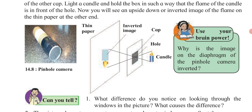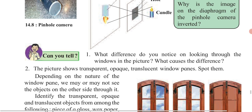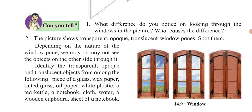The next topic is transparent, opaque, and translucent materials. A piece of glass is transparent, wax paper is translucent, tinted glass is translucent, oil paper is translucent, and white plastic is transparent. So what is actually transparent, translucent, and opaque? Transparent means you can clearly see the object on the other side through it.